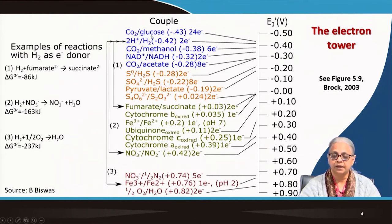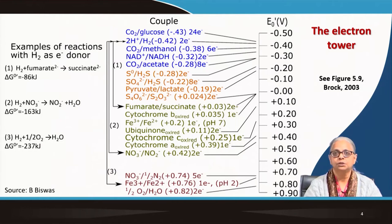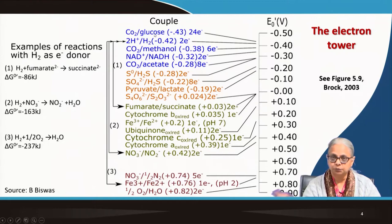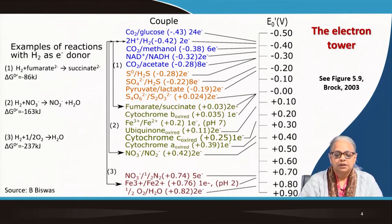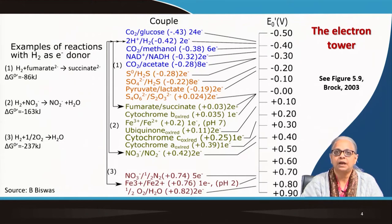Here we have carbon dioxide and glucose. Carbon dioxide is converted to glucose in photosynthesis, and glucose is converted to CO₂ in aerobic respiration. No matter which reaction is happening, we write it the same way. Here we have the electron tower — the most negative redox values or electron potential are at the top and the most positive values are at the bottom.